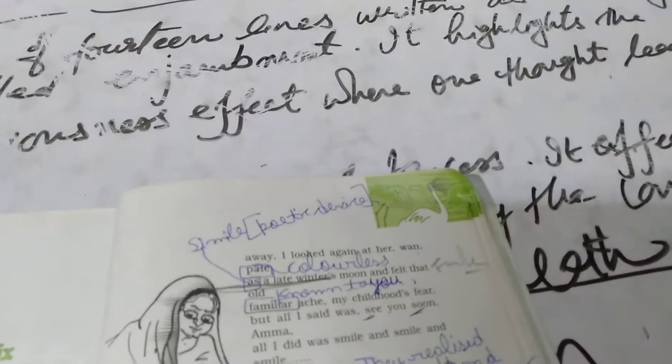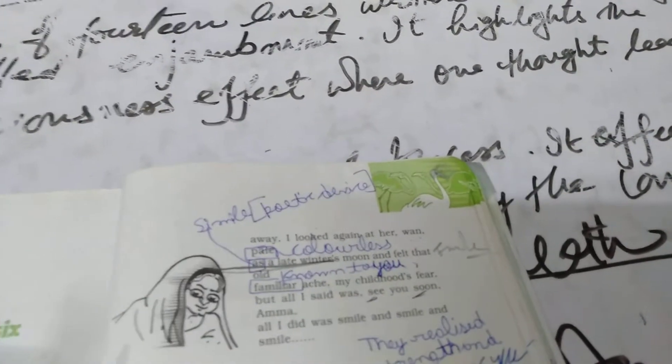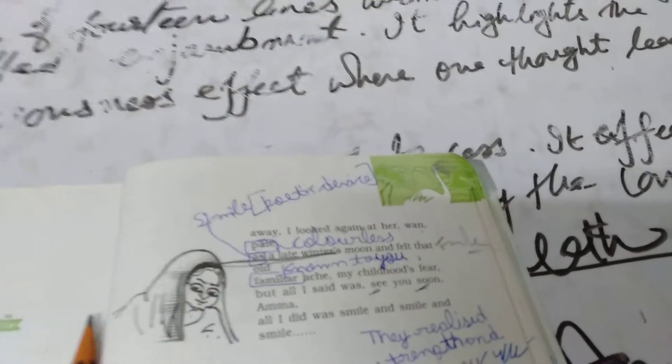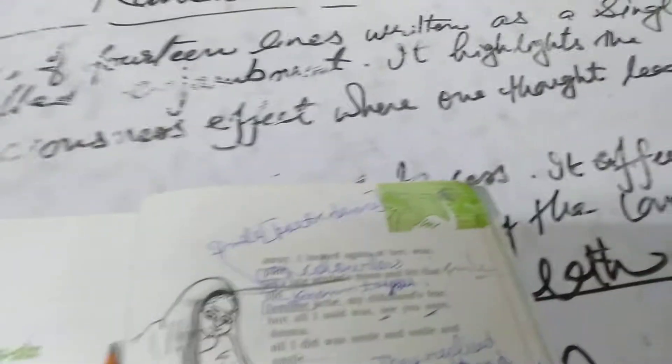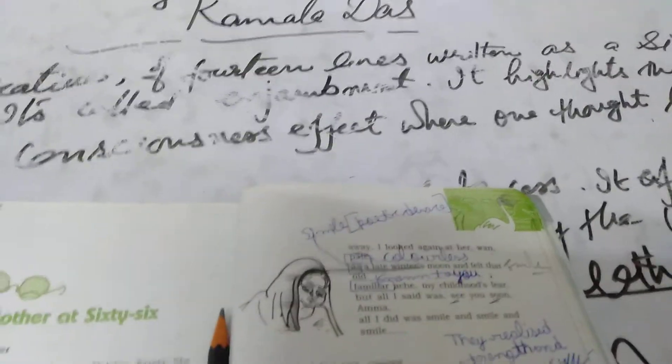You must have seen the winter moon in the month of December, January. Just try to see the moon at night. When there is fog all around, the moon is very light. It's not shining properly. It's very dull.